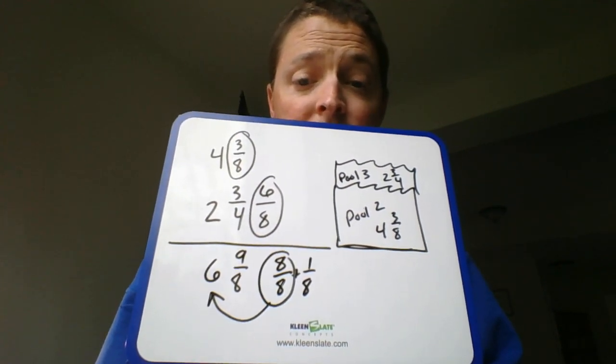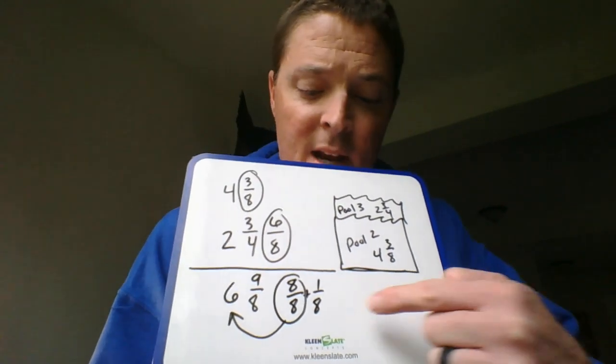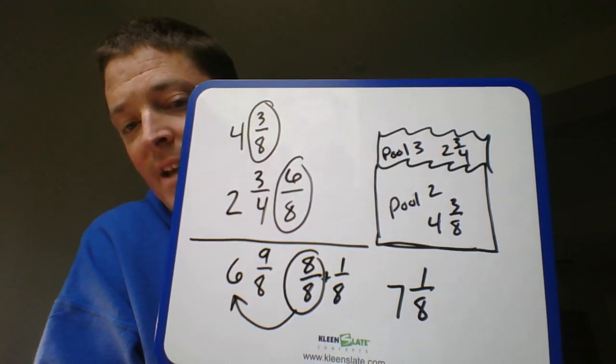So that six is going to now become, you guessed it, seven wholes, and we have one-eighth left over. So our new number is going to become not six, but seven and one-eighth that was left over. So we're going to write it like that for our final answer of seven and one-eighths.